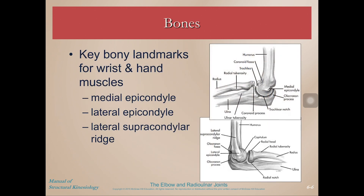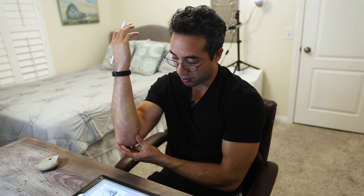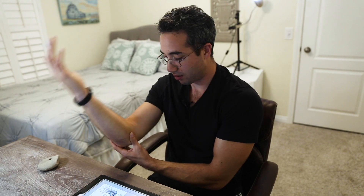More key bony landmarks: the medial epicondyle, which we already mentioned, and the lateral epicondyle on the other side, with the lateral supracondyloid ridge running up above that. Those are very easy to palpate. On most people, if you find the olecranon process and then go medial and lateral as well as proximal to that point, you can find the most lateral and medial bony points right in line with the axis of rotation of your elbow.